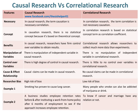In causal research, there is no statistical concept because it is based on theoretical concept. Whereas correlational research is based on a statistical concept termed the correlation coefficient. In causal research, researchers have firm control over variables to obtain results, whereas correlational research allows researchers to collect much more data than experiments.